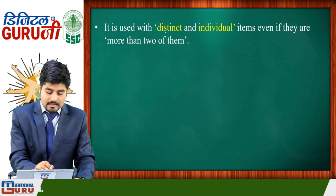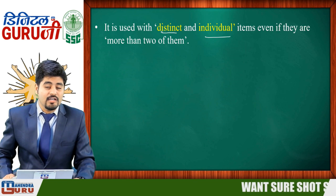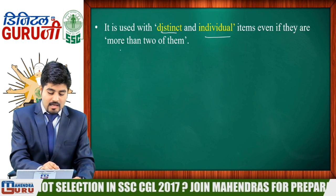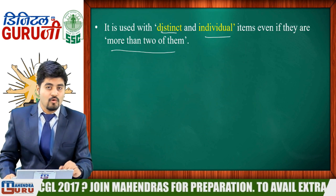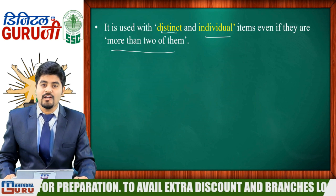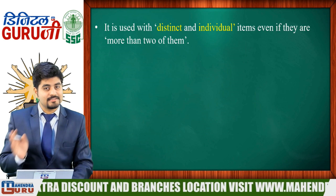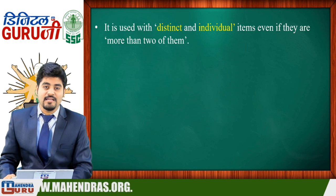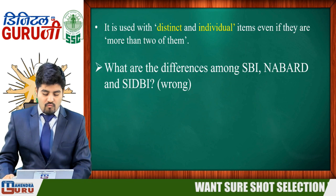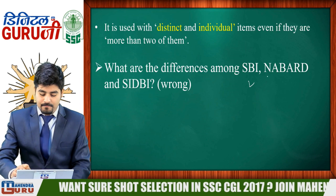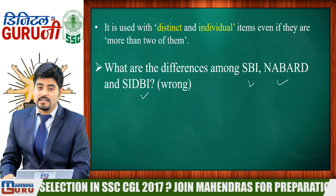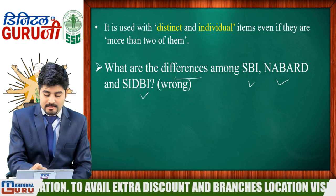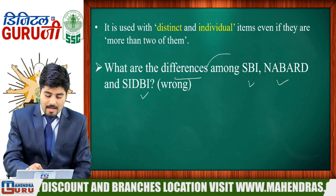'Between' is also used with distinct and individual items. Even if there are more than two of them, if the items are named distinctly, we use 'between.' For example: 'What are the differences between SBI, NABARD, and SIDBI?' Here, SBI, NABARD, and SIDBI are three institutions, but because they are named distinctly and individually, 'between' is correct.